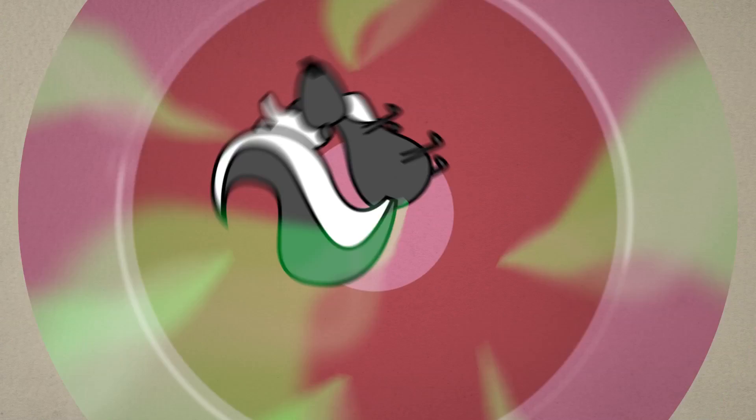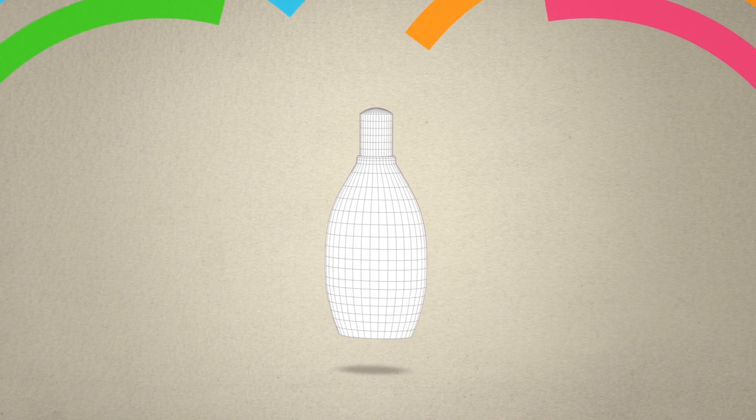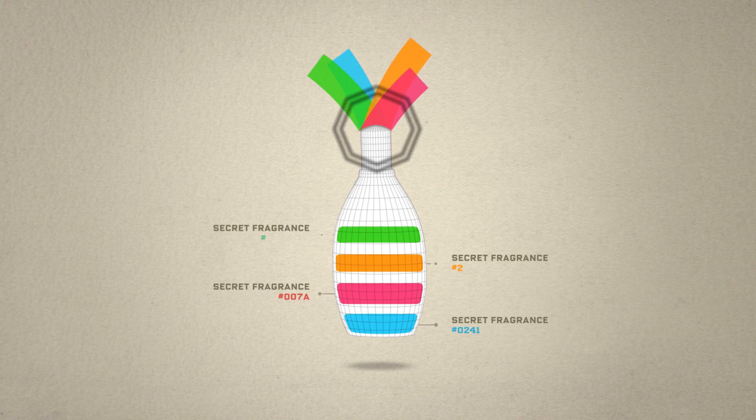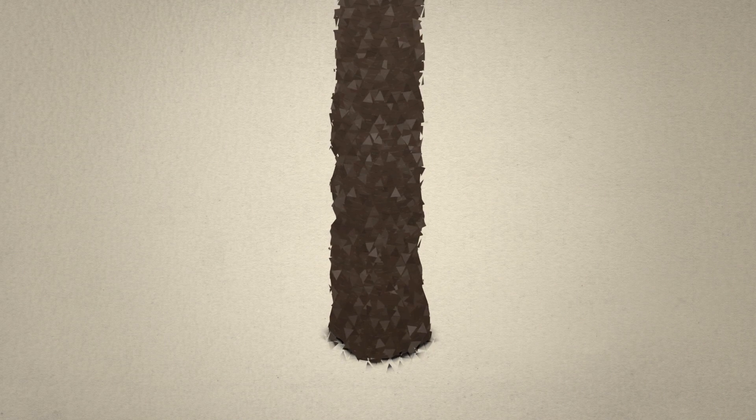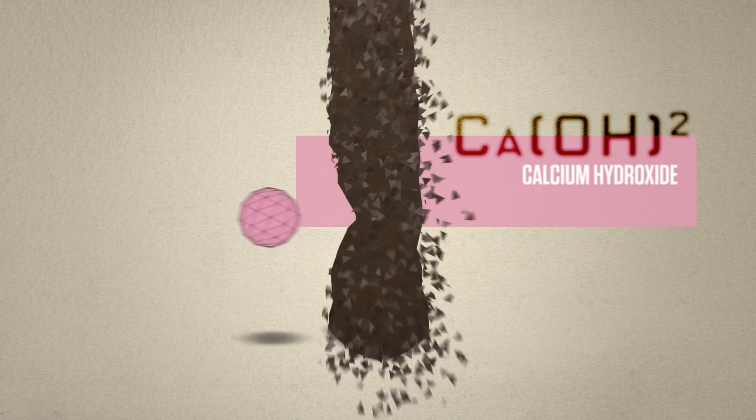Pew! So Nair is loaded with a secret mix of fragrances to cover up the stench. Once the stinky stuff weakens hair, calcium hydroxide delivers the final blow.